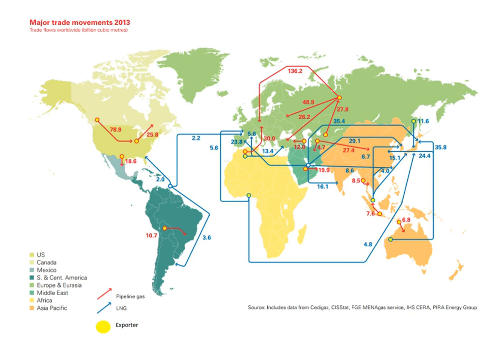Natural gas is a naturally occurring hydrocarbon gas mixture consisting primarily of methane, but commonly including varying amounts of other higher alkanes, and sometimes a small percentage of carbon dioxide, nitrogen, hydrogen sulfide, or helium.